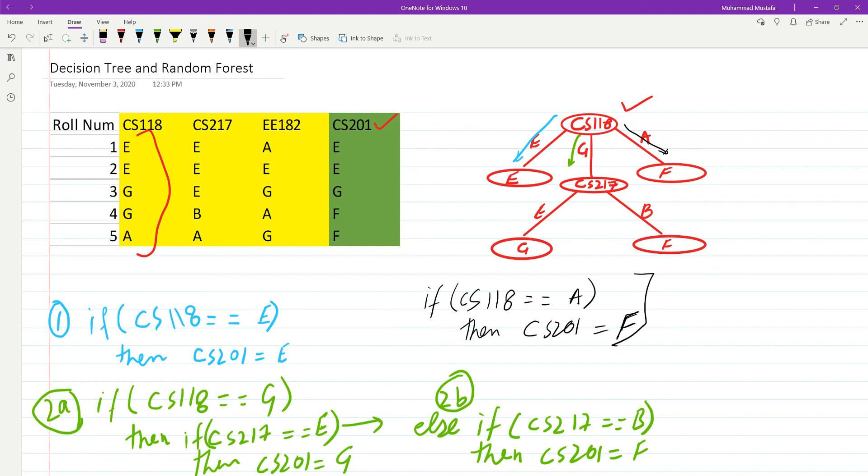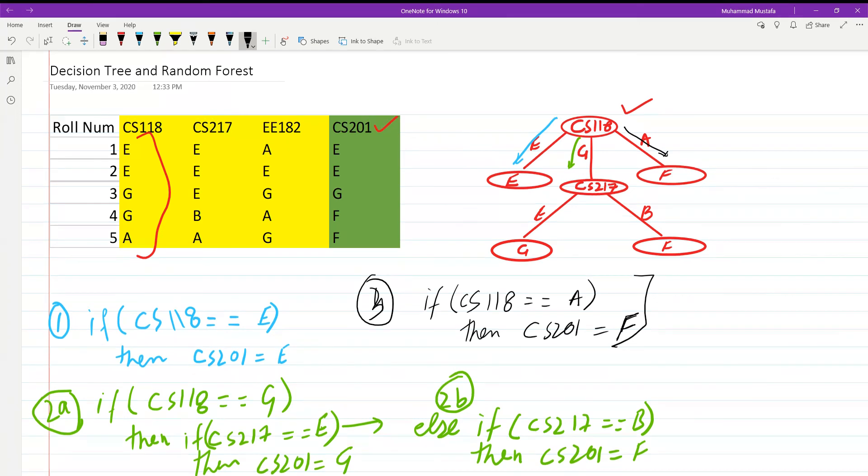The output of a decision tree is a set of rules that we can follow to predict the output of our new test case. That's it for the decision tree. In the next video we'll discuss the random forest that we can generate from this tree and how it can improve the accuracy and performance of our prediction.